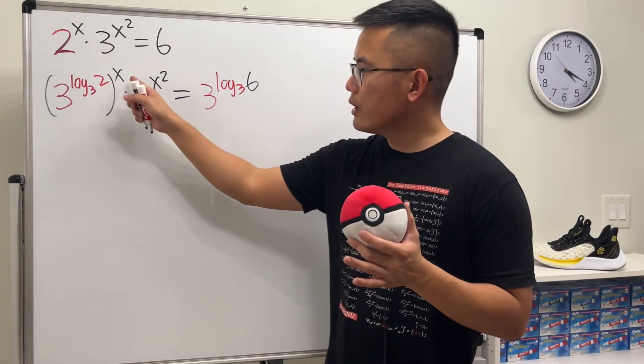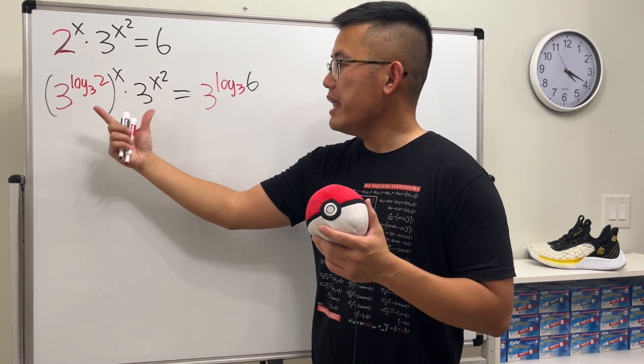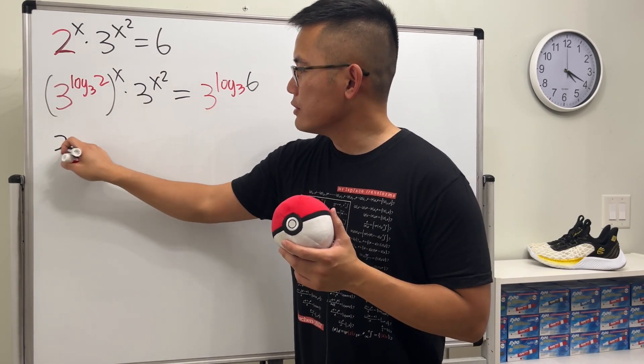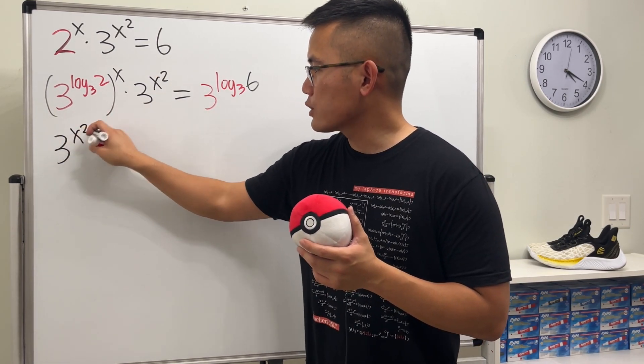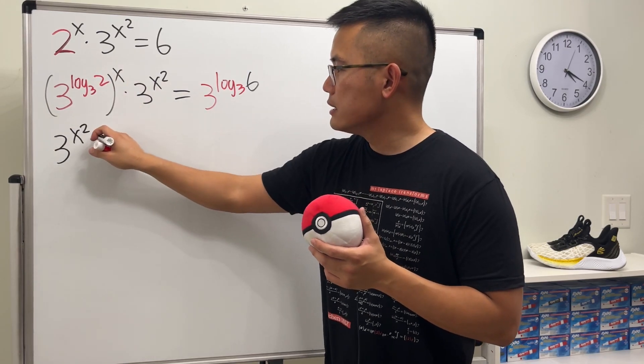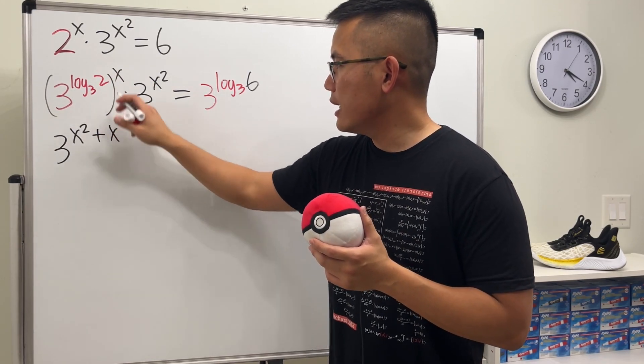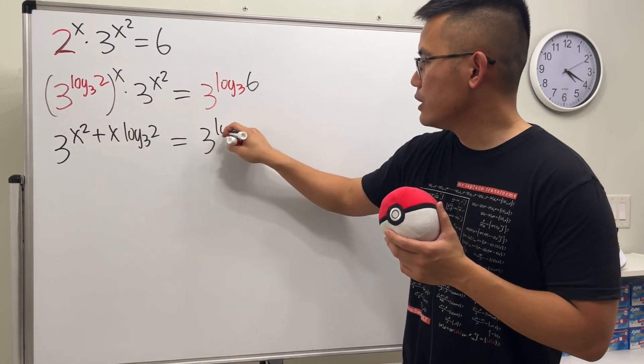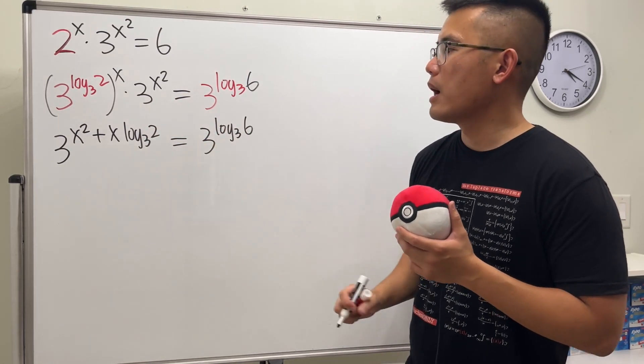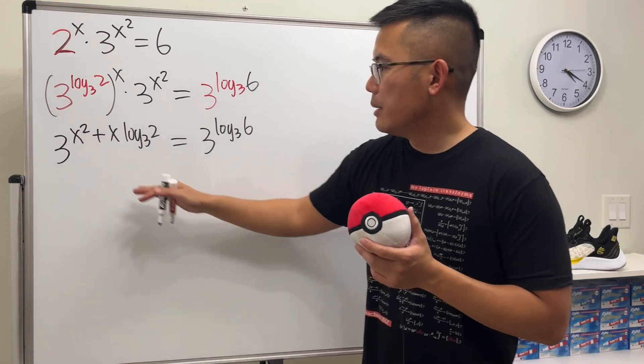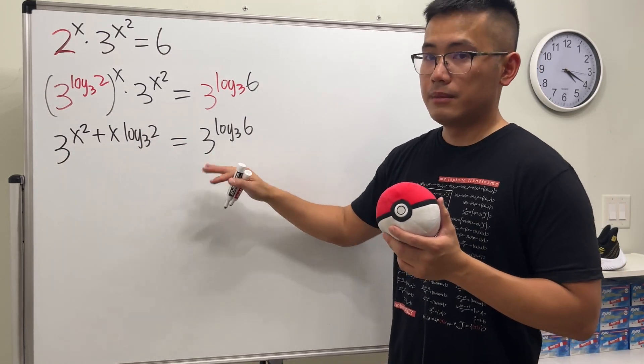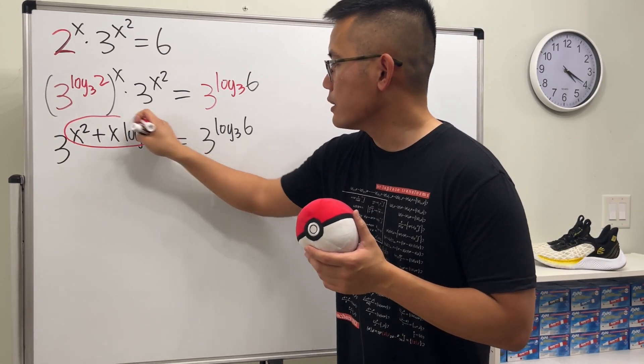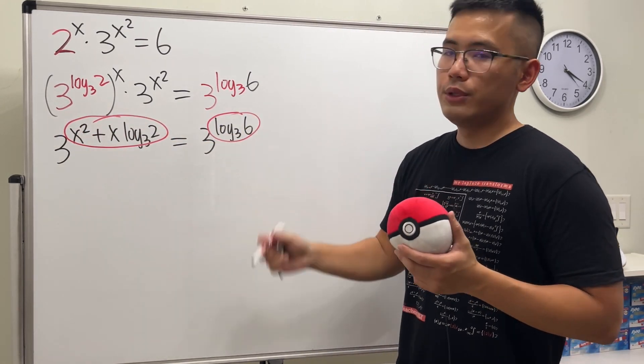Now we can multiply the powers here and then we can add the powers because they have the same base. So on the left hand side we have 3 to the, let's write this down first, which is x squared, and then plus let's write down the x next, and then we have log base 3 of 2, and that equals 3 to the log base 3 of 6 power. Perfect, because they have the same base on both sides, and the base is just a number, so you can just consider the powers here and here, they have to be equal.